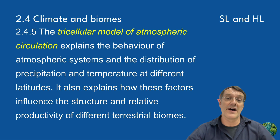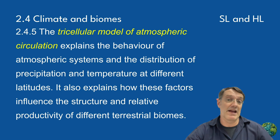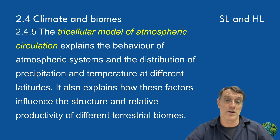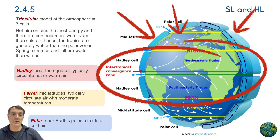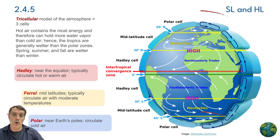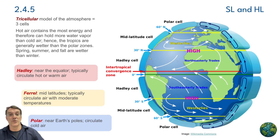The tricellular model of atmospheric circulation helps explain many of these global patterns. This model shows how air moves in three major cells in each hemisphere, distributing heat and water around the planet, creating predictable patterns of rainfall and temperature at different latitudes. We can see the three main cells: the Hadley cell near the equator, the Ferrel cell in the mid-latitudes, and the polar cell near Earth's poles. Hot air contains more energy and water vapor than cold air, which explains why tropical zones typically receive more precipitation than polar regions.